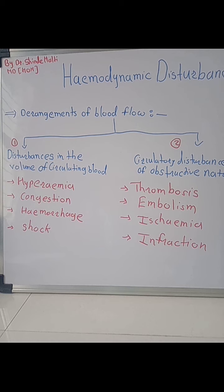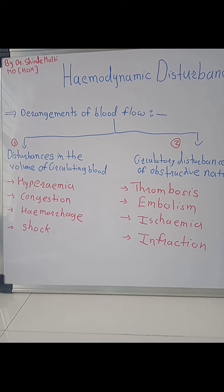Thrombosis is the process of formation of a solid mass in circulation from the constituents of flowing blood; the solid mass itself is called a thrombus. Embolism is the process of partial or complete obstruction of some part of the cardiovascular system by any mass carried in the circulation. There are different types: thromboembolism, pulmonary embolism, gas embolism, air embolism, and fat embolism.